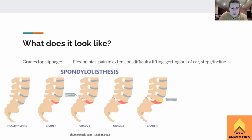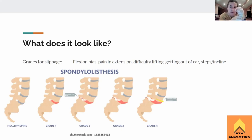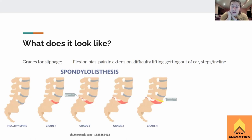Here are pictures of what the grades look like. A healthy spine has no slippage. Grade one is up to 25% of the vertebrae slipping anteriorly over the other one. Grade two is 25% to 50%. Grade three is 50% to 75%. Grade four is 75% or more. Usually by grade two they've caught it and are doing surgery, because it's just going to get worse.